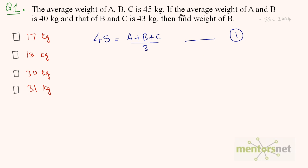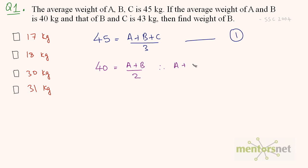Let us move on to the second statement. If the average weight of A and B is 40 kgs, we can write 40 is equal to A plus B divided by 2. Therefore, A plus B is equal to 2 times 40, that is 80. That is another equation we've got.